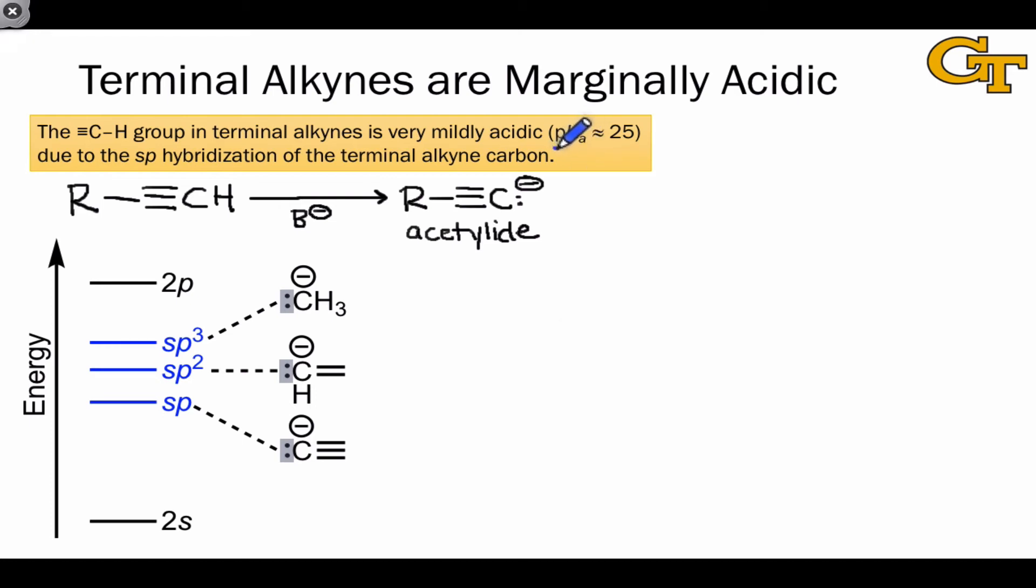The pKa of a terminal alkyne is generally about 25, which is acidic enough to be deprotonated by many common strong nucleophiles or strong bases that we find in use. The reason for this harkens back to the effect of hybridization on the energy of an electron pair in a hybrid orbital.